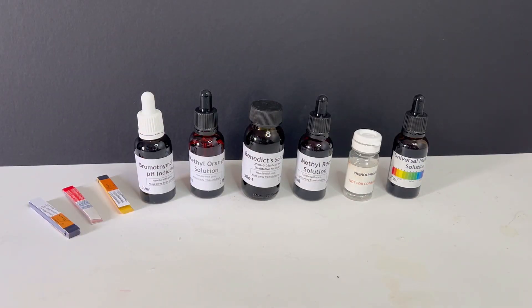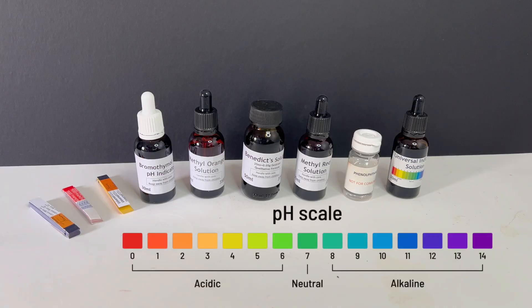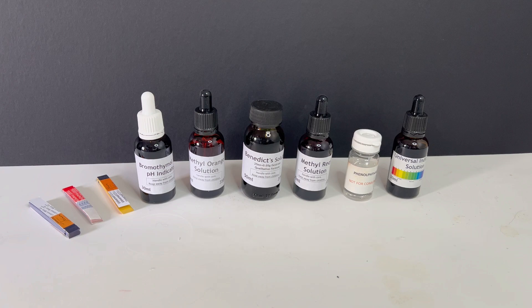Let's learn about indicators — special substances that help us find out whether something is an acid or a base, or even if a chemical reaction has taken place. Before we look at examples, let's quickly review what pH means. The pH scale is a number scale that runs from 0 to 14. Substances with a pH less than 7 are acids, a pH of 7 are neutral, and a pH greater than 7 are bases or alkalis. Acids taste sour, like lemon juice or vinegar, while bases feel slippery, like soap or baking soda dissolved in water. Indicators help us see these differences by changing colour.